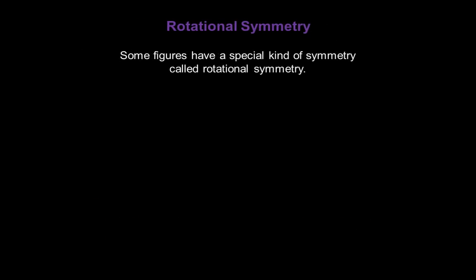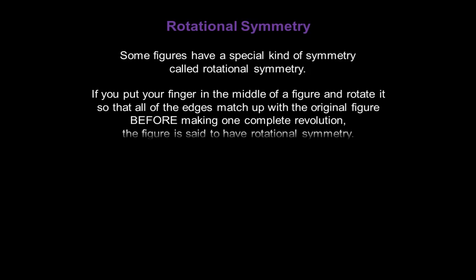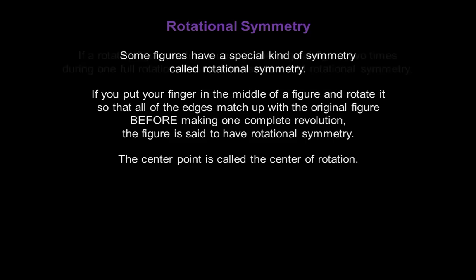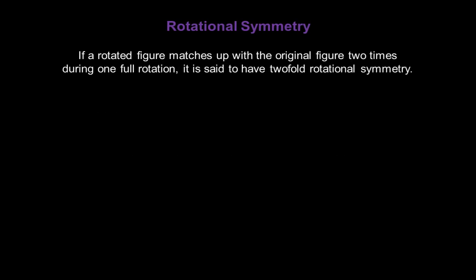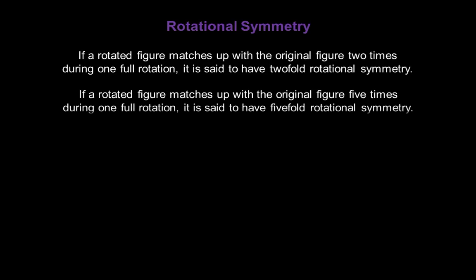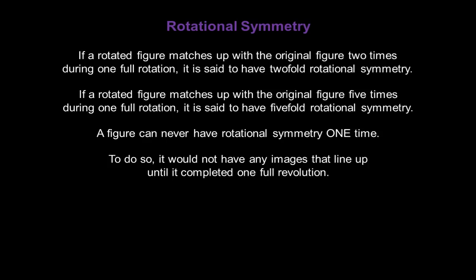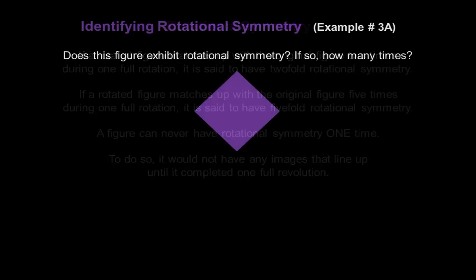Let's wrap up this discussion of symmetry by talking about rotational symmetry. Some figures have a special kind of symmetry called rotational symmetry. If you put your finger in the middle of a figure and rotate it so that all of the edges match up with the original figure before making one complete revolution, the figure is said to have rotational symmetry. The center point is called the center of rotation. If a rotated figure matches up with the original figure two times during one full rotation, it's said to have two-fold rotational symmetry. If it matches up five times, it has five-fold rotational symmetry. A figure can never have rotational symmetry one time — it would not have any images that line up until it completed one full revolution.